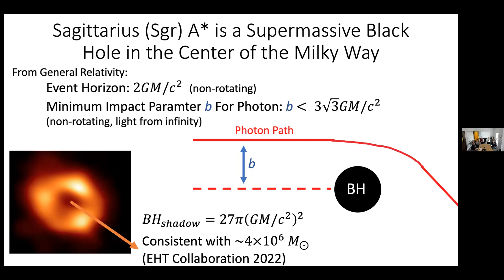When you say photons don't escape to infinity, do you mean they end up in the black hole? They can do a few things — they can fall in, or there are some weird orbits where they just go around in circles around the black hole. So the photons we see aren't directly from the event horizon; the shadow isn't directly caused by the event horizon. It's caused by how photon geodesics behave around the object, at a radius a little larger than the event horizon.